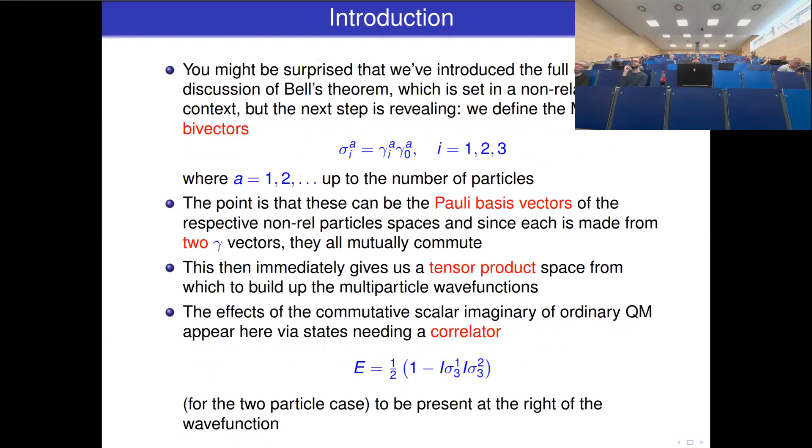You might be surprised we've introduced the full multiparticle STA in discussion of Bell's theorem in a non-relativistic context, but the next step is revealing. We define the multiparticle STA bivectors like this: we have new versions of these Pauli vectors, which are really bivectors in the spacetime algebra, one per particle group defined by gamma-i-a gamma-naught-a, where a labels the particles. Because they're made of two gamma-basis vectors, these Pauli-basis vectors from different particle spaces mutually commute because they're bivectors overall. So you've given yourself a tensor product space from which to build up multiparticle wave functions.